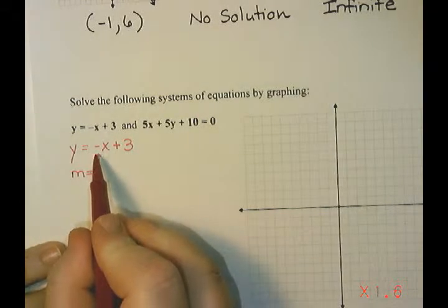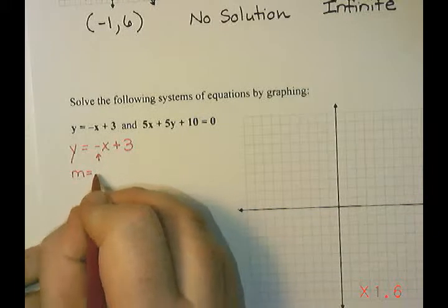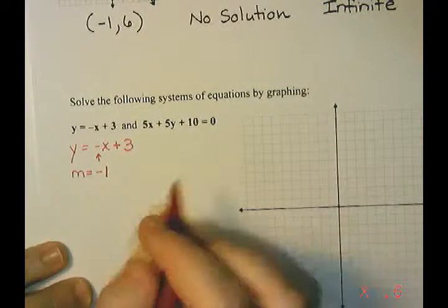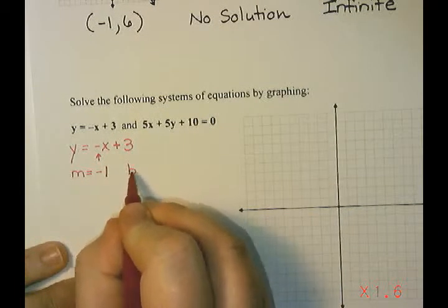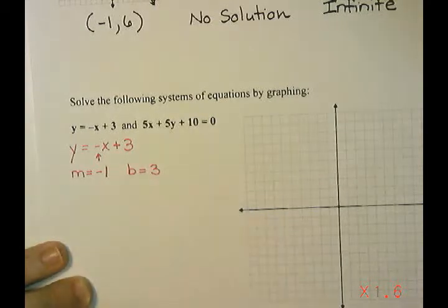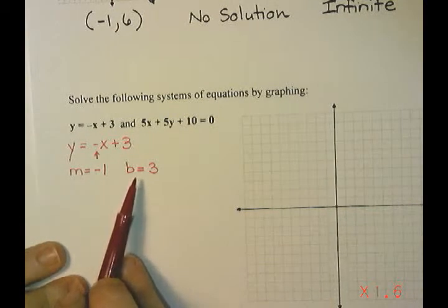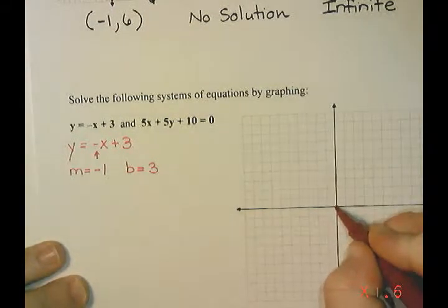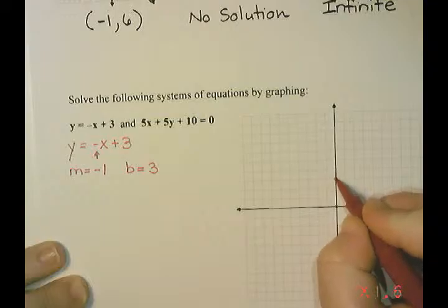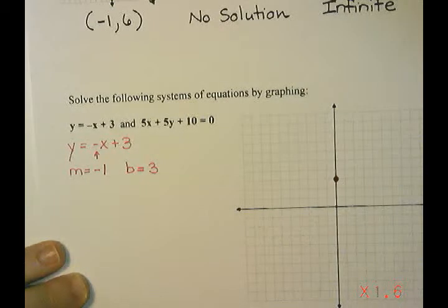which is really just a negative, but it's secretly a negative 1. And my y-intercept is the number 3. So what I'm going to do is on my graph, I'm going to start with the y-intercept of 3. So on the y-axis, I'm going to find where positive 3 would be and make a point there.